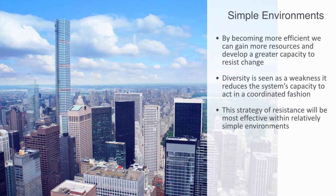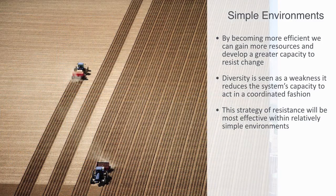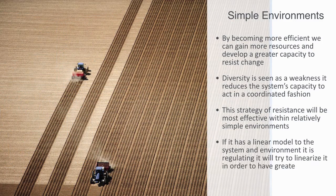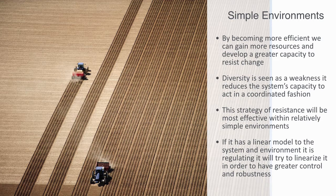If it has a linear model to the system and environment it is regulating, it will try to linearize the system in order to have greater control and robustness. To the extent that the control process and the model that guides this process is accurate and reliable, control itself delivers stability, robustness, and the capacity to resist change, which is one method to ensuring critical functionality and the system's preservation.